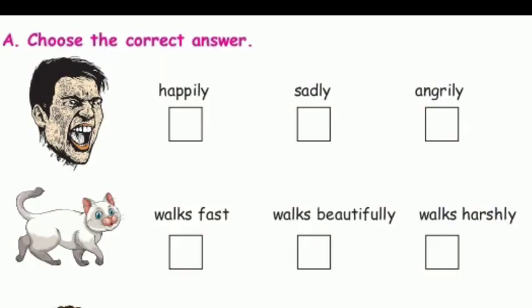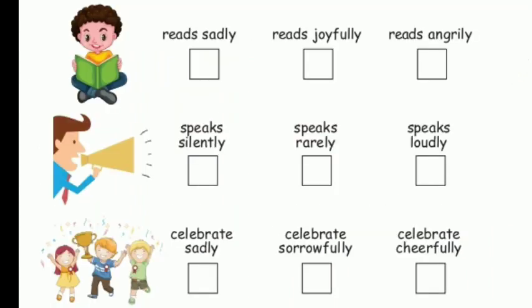Choose the correct answer. Look at the picture and pick the right adverb: happily, sadly, or angrily. He walks fast. Looking at the picture of a cat, choose: walks beautifully. Next, a boy reading a book — reads joyfully. Next, a boy speaking — speaks loudly.